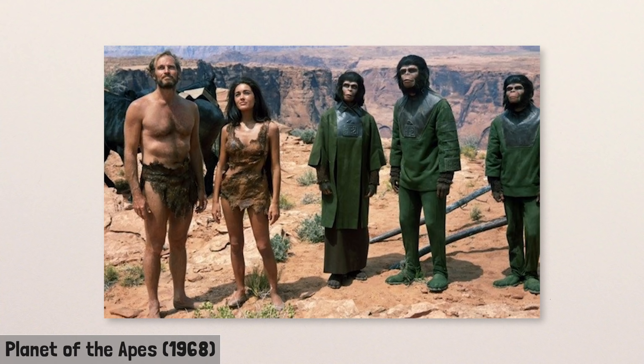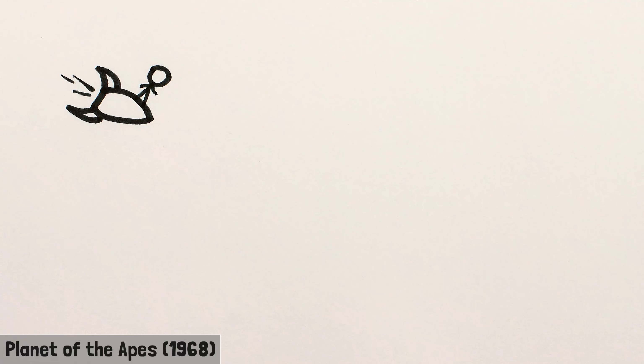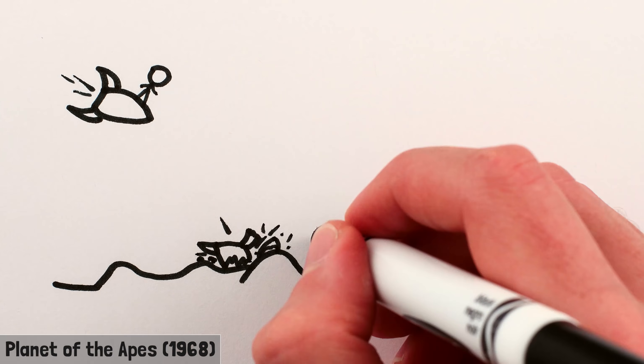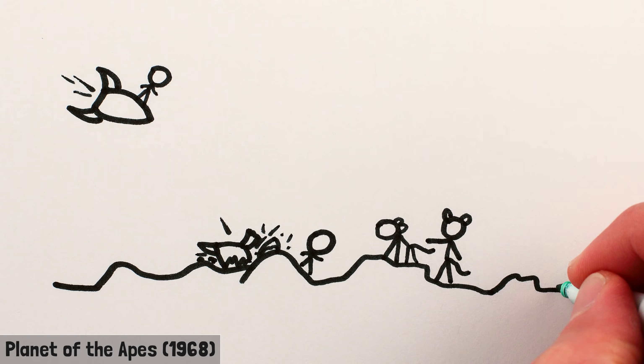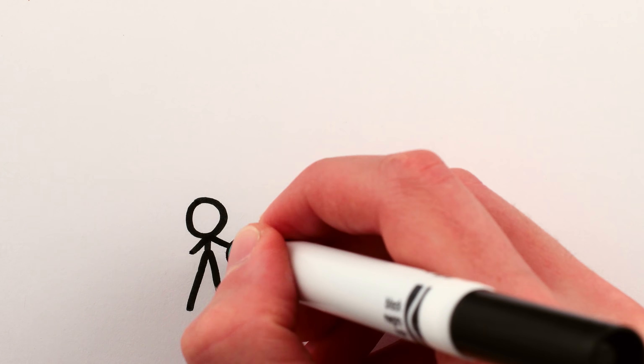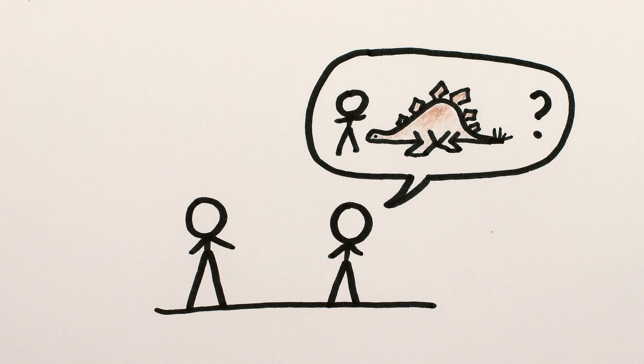The original Planet of the Apes film is similar, where astronauts experience extreme time dilation and then crash land on a strange planet ruled by apes that, major spoiler, turns out to just be Earth in the distant future. But what about, like, time travel time travel?